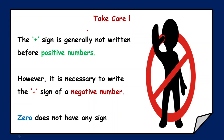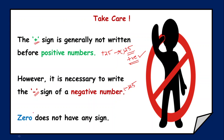Before writing any positive number it is not compulsory to mention the plus sign — you can simply write 25 instead of plus 25. If there is no sign in front of a number, that means the number is positive. But for negative numbers it is mandatory to write the minus sign; without it the number will be considered positive. Zero has no sign and is neither positive nor negative.